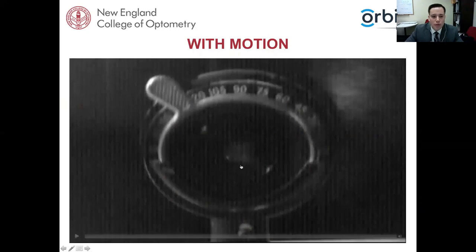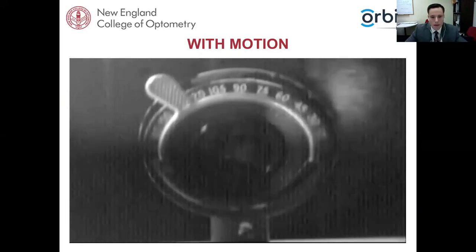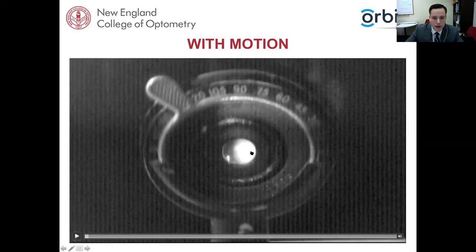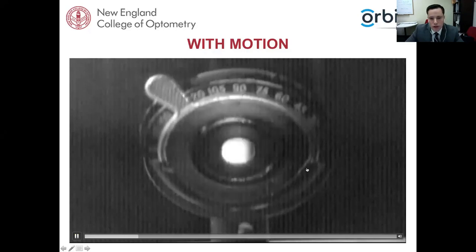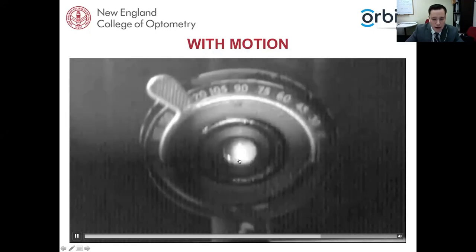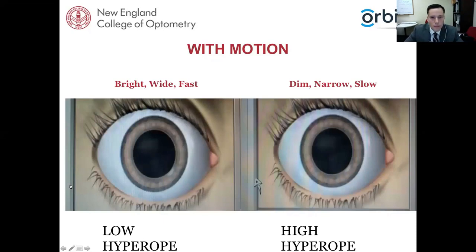Now let's look at what with motion looks like. The reflex inside the pupil and the clinician's scope light are moving in the same direction — to the right and then to the left — that's with motion. Similarly for with motion, a low hyperope shows a bright, wide, and fast reflex versus a high hyperope where it's dim, narrow, and slow, just as we saw for against motion.